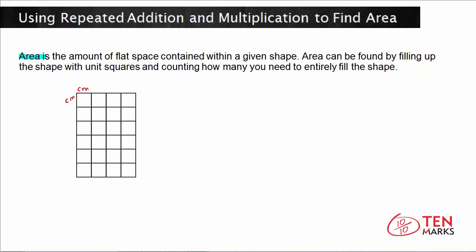Because area is a measurement of the length and the width, you always use square units. The squared symbol represents that area is a measurement of two different dimensions: length and width. So if you have centimeters as your units, then when you take the area, you have centimeters squared. If your units were meters, you would have meters squared.